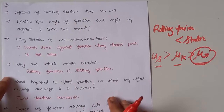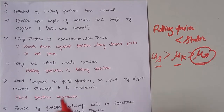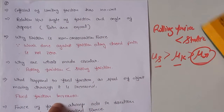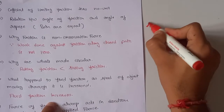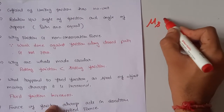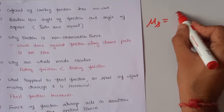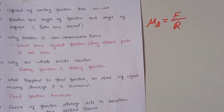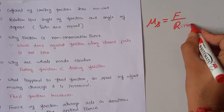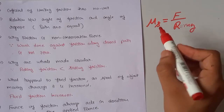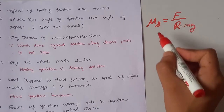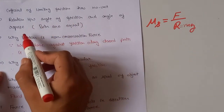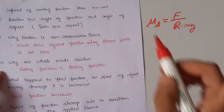An important point: the coefficient of limiting friction has no unit. The formula is μs = force of friction divided by normal reaction, where R = mg. Since both are in the same units, μ is dimensionless.